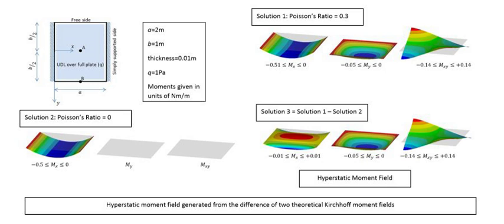All structures are designed to exceed the load those structures are expected to experience during their use. The design factor represents the degree of uncertainty in the value of the loads, material strength, and consequences of failure. The stresses the structure is expected to experience are known as the working, design, or limit stress. The limit stress is chosen to be some fraction of the yield strength of the material. The ratio of the ultimate strength of the material to the allowable stress is defined as the factor of safety against ultimate failure. Laboratory tests are usually performed on material samples in order to determine the yield and ultimate strengths, and a statistical analysis of the strength of many samples is performed to calculate the particular material strength.